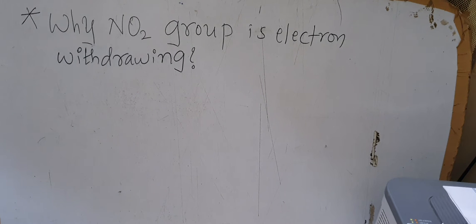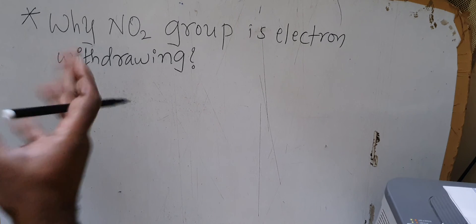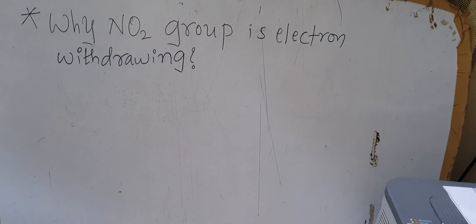Hello everyone. Today I will be discussing why the nitro group is electron withdrawing. Some groups are electron donating and some are electron withdrawing. Examples of electron donating groups are the hydroxyl group, alkyl group, and alkoxy group. Examples of electron withdrawing groups are the formyl group, nitro group, fluoro group, and ester groups.